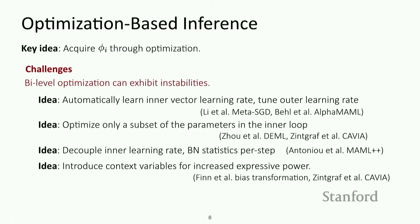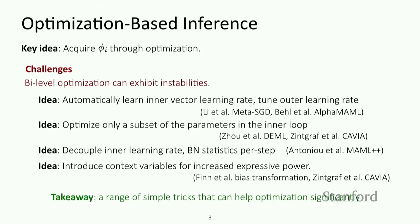There are also papers that have introduced context variables for increased expressive power — basically additional variables appended onto the activations of each layer that allow the gradient steps to store information in those parameters in a way that doesn't interfere with the other parts of the network computation. The main takeaway from these papers is that there's a range of simple tricks that can help the meta-optimization process significantly.